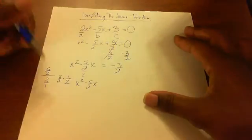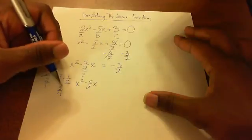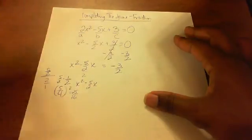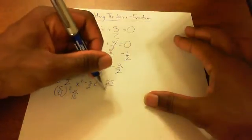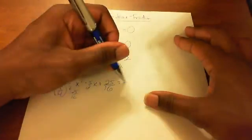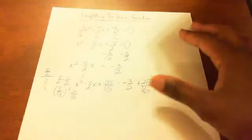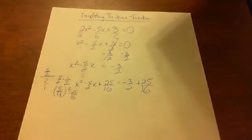So now we have x² - 5/2x, and then 5/4 squared is 25/16. So we get plus 25/16 equals negative 3/2 plus 25/16. Now you're like, dang, I don't even know how to do that fraction though.